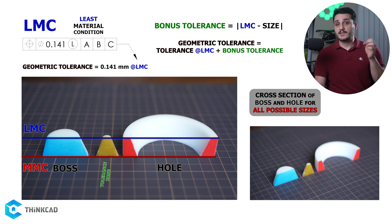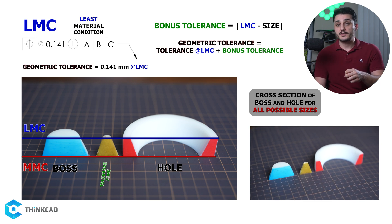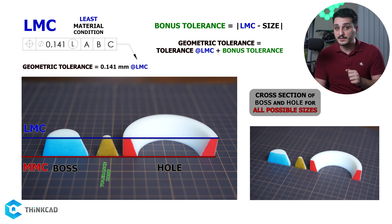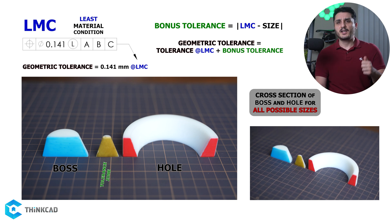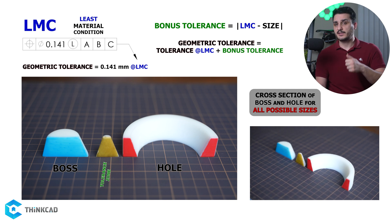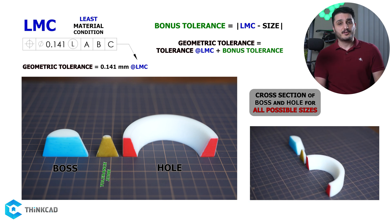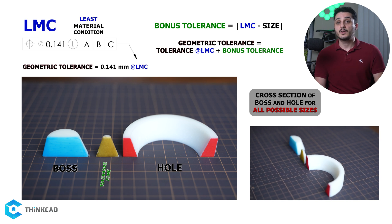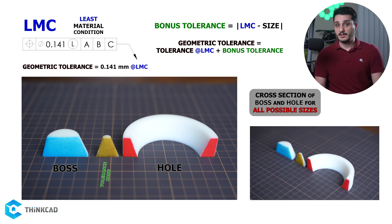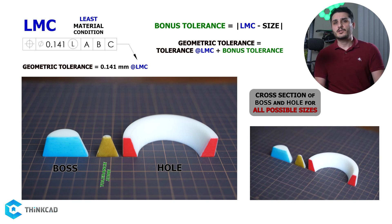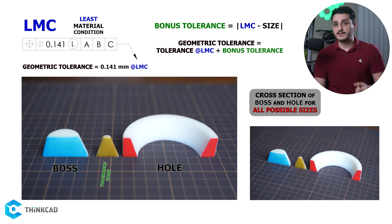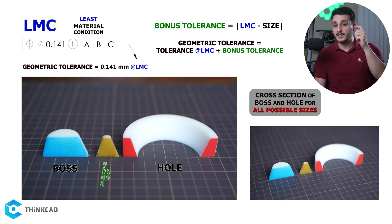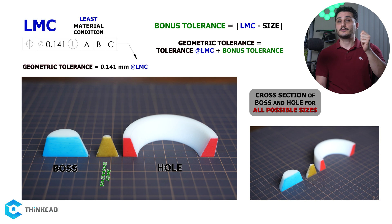By using the MMC and LMC modifiers, you get to gain more geometric tolerance as your size changes in a certain direction. This brings many advantages when used properly. Let me go over a couple of examples and show you what I mean in a way that you never forget it.